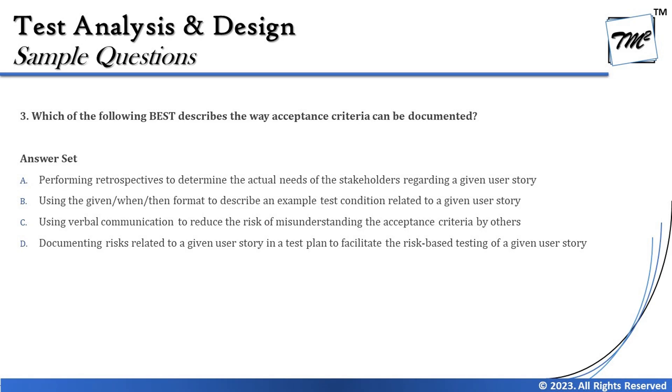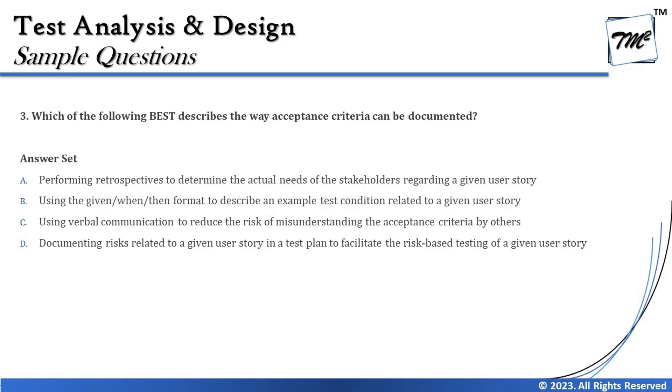Option A says: 'Performing retrospectives to determine the actual needs of the stakeholder regarding a given user story.' Retrospectives are not used for determining what should be written in the user story; they are used to capture lessons learned and improve the development and testing process. So retrospectives do not determine how to write acceptance criteria — option A is not the answer.